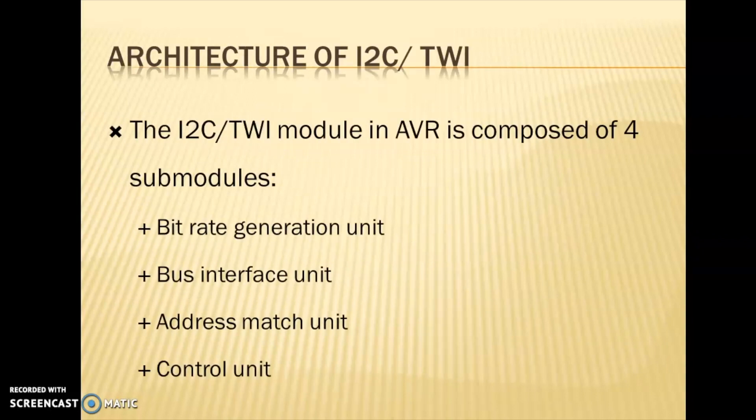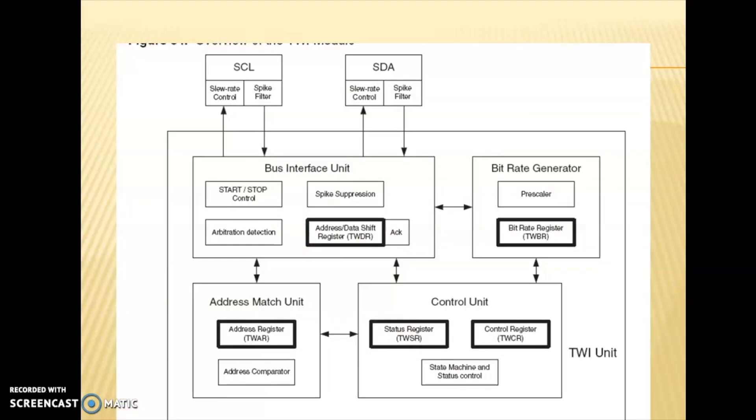The architecture of I2C or TWI consists of four submodules: the bitrate generation unit, the bus interface unit, the address match unit, and the control unit.